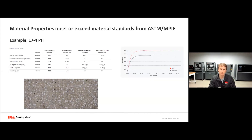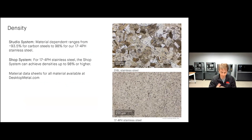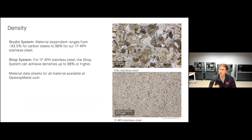Looking at 17-4 PH stainless steel printed on our Shop System, yield strength just off the printer is about 660 MPa, getting up to 980 MPa with heat treatment — exceeding MPIF 35 standards compared to a metal injection molded component. When looking at density on the Studio System, on carbon steels we're about 93.5–94% dense. On 17-4 PH stainless steel, we're up to 98% dense — similar to or higher than a cast component depending on the casting method. On the Shop System, we're achieving densities on 17-4 PH of over 98%. All of our material data sheets are available for download on our website.